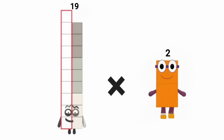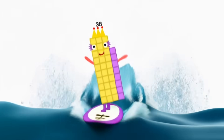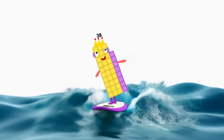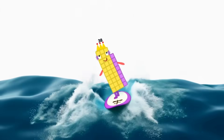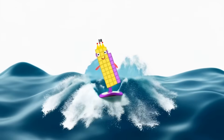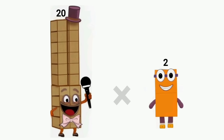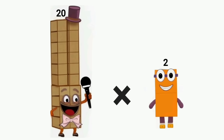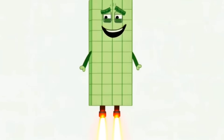19 times 2 equals 38. 20 times 2 equals 40.